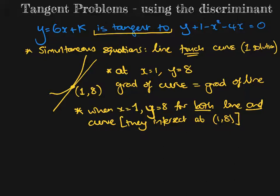So in this particular example, I would say if I do simultaneous equations, I'll make the first one say y equals, which it already does, sub it into the second one. So 6x + k, that's y, plus one minus x² - 4x = 0.